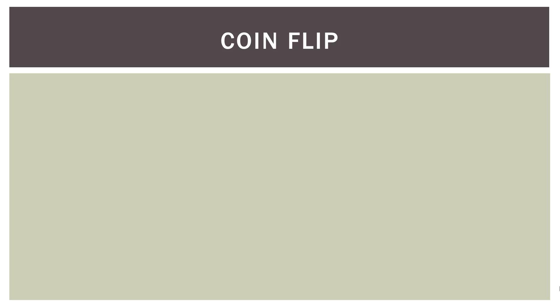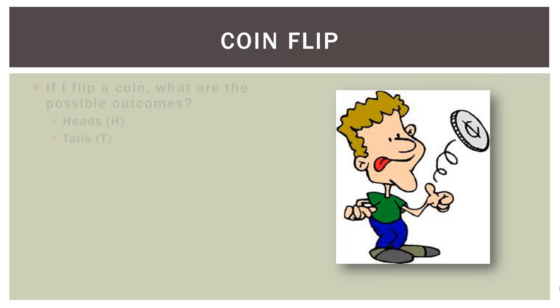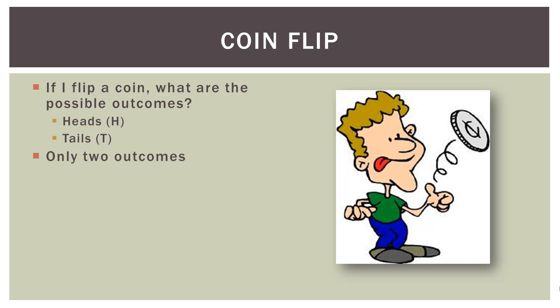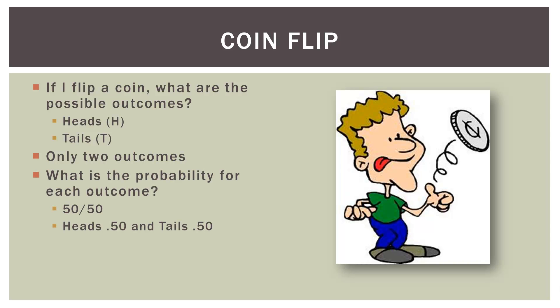Let's start with a very simple and common example: the flip of a coin. If I flip a coin, what are the possible outcomes? I could get heads or tails — those are the only two outcomes. We're going to ignore the one-in-a-trillion possibility of it landing on its edge. So what is the probability for each outcome? It's commonly noted as 50-50, so heads has a 50% chance and tails has a 50% chance. In probability terms, heads has a probability of 0.5 and tails a probability of 0.5.